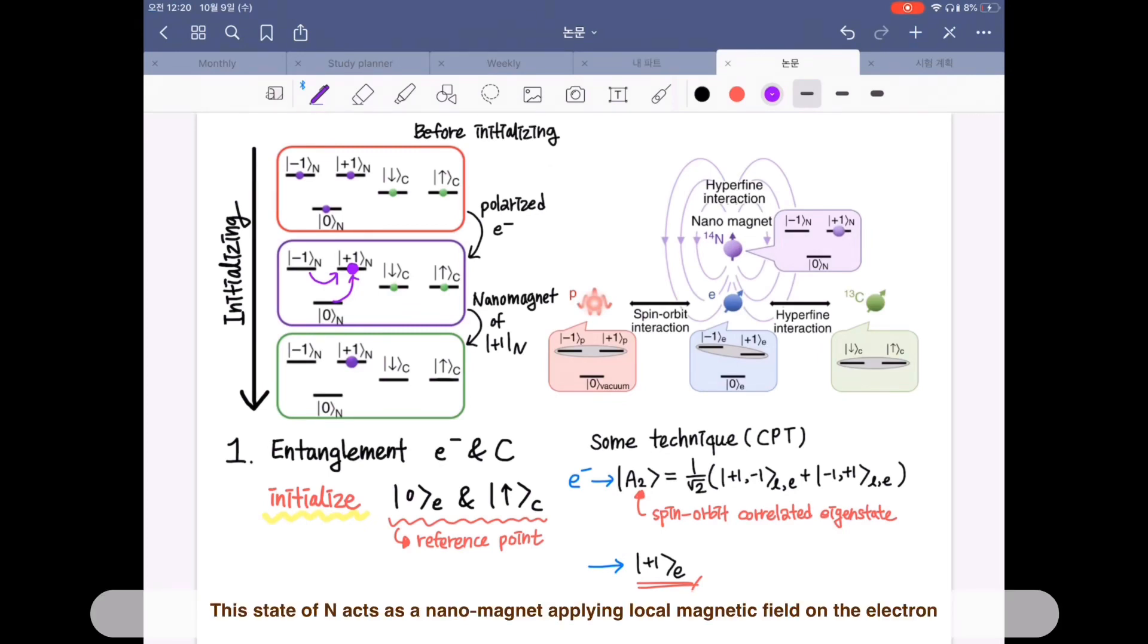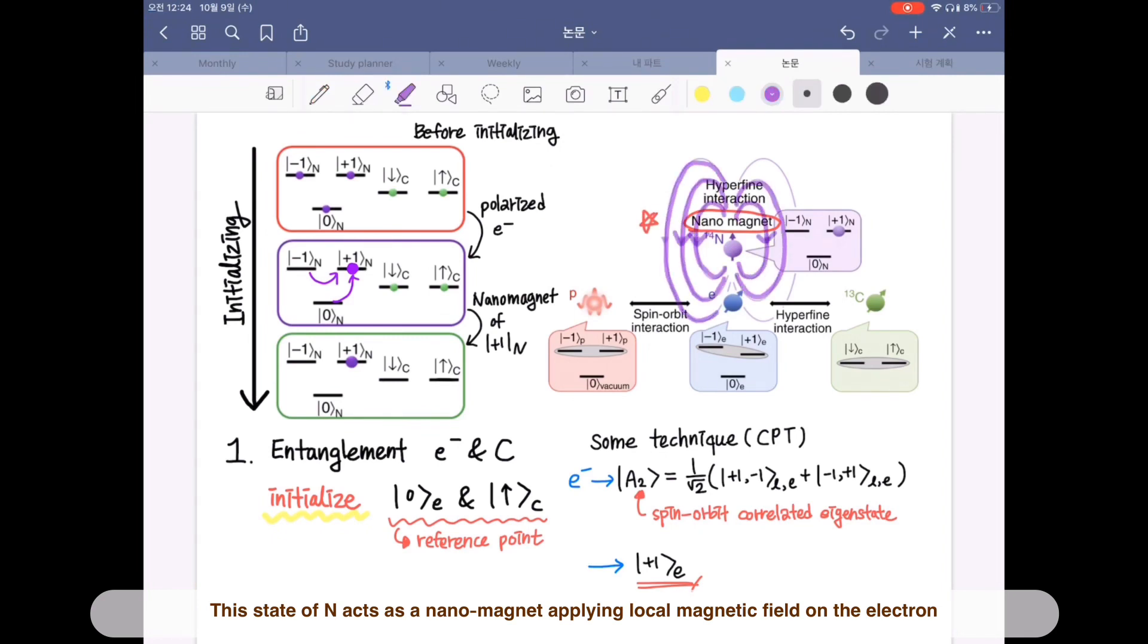This state of nitrogen acts as a nanomagnet applying local magnetic field on the electron to initialize the carbon nuclear spin into the up spin. The reason why we initialize them into zero and up spin states is to apply specific strategies to make an entanglement between them.